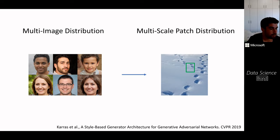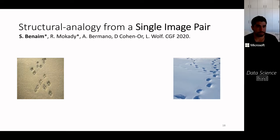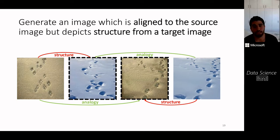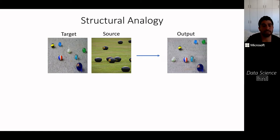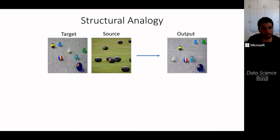The first work in this area is structural analogy. Given a pair of images, we produce images that are analogous to the source but depict the structure from another image. For example, we produce an image analogous to dog footprints but depicting the structure from a snow steps image. Taking a source image of balls and a target image of marbles, we generate an image that follows the spatial distribution of the balls while depicting the internal patch statistics of the marbles. The generated marbles look realistic and have the correct shape while following the spatial distribution of the balls.